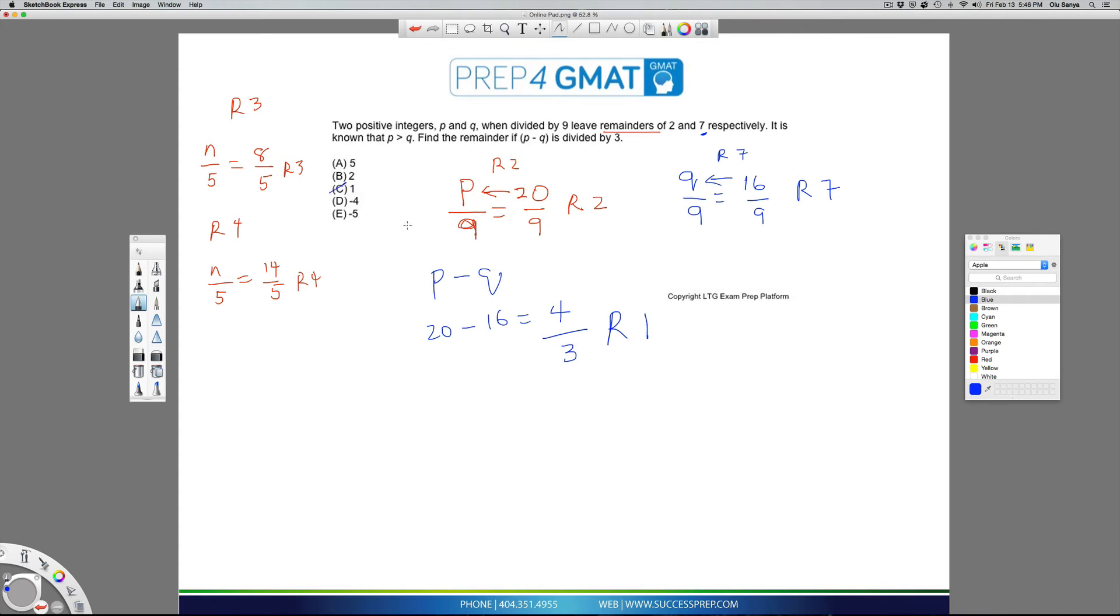All we're doing here is understanding how to select our P and Q by picking a number that nine goes into and then adding the remainder we want. That's what we did here. So nine goes into 18 because I wanted the P to be higher. That's 18 perfectly. But with remainder two, you add two to it. Nine goes into Q perfectly. Nine goes into nine perfectly. And then because you want a remainder of seven, you add seven to the nine. And that's how we got 16. When we get the P and Q, the rest is easy because you just subtract 20 minus 16, get four, and then four divided by three, the remainder is one, not how many times it goes, but the remainder is one. And that's how we got our answer, which is C.